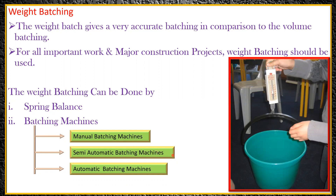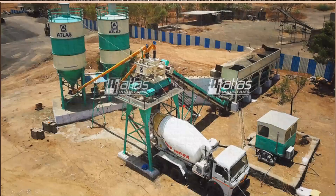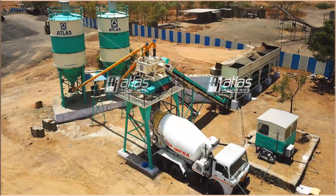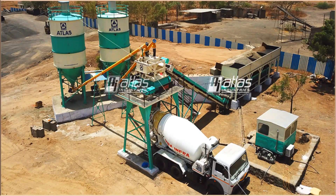The semi-automatic batching machine works that way. Coming to the automatic batching machine — this type of batching machine is what we usually find in the construction industry. Everything is set up and there is a control room. Within a single click from the control room, everything is arranged: all the materials flow on their own, all processing happens, and the concrete gets ready and is finally transported with the help of a transit mixer.